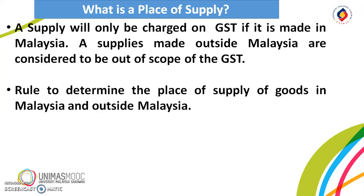A place of supply can be determined by the rule that the place of supply of goods is in Malaysia, if the supply involves goods which are moved from a location in Malaysia to another place in Malaysia, or from another location in Malaysia to a place outside Malaysia.